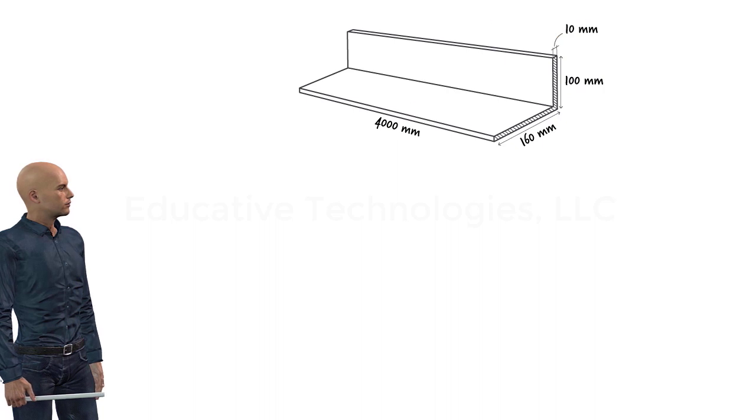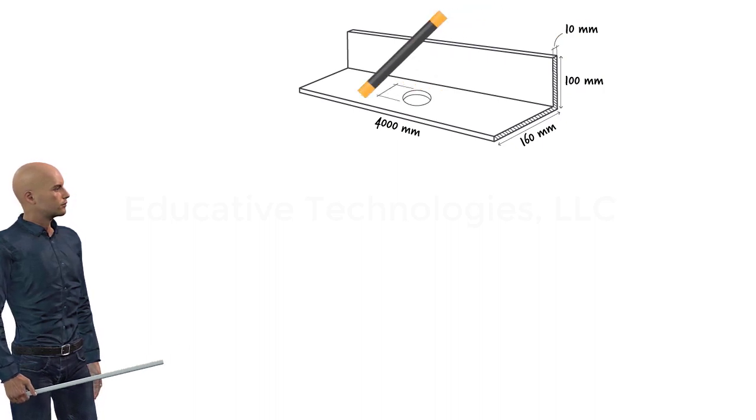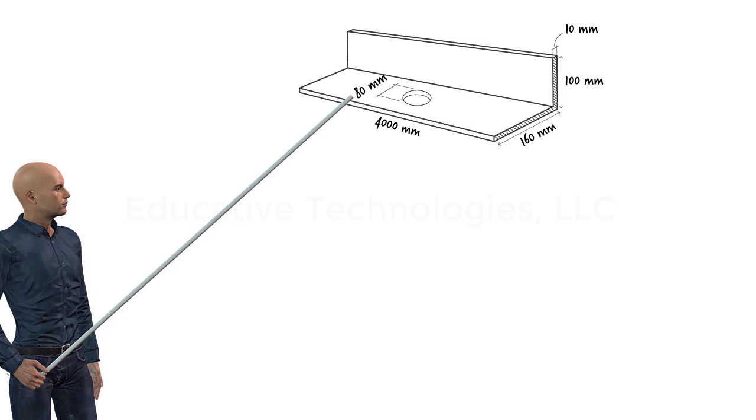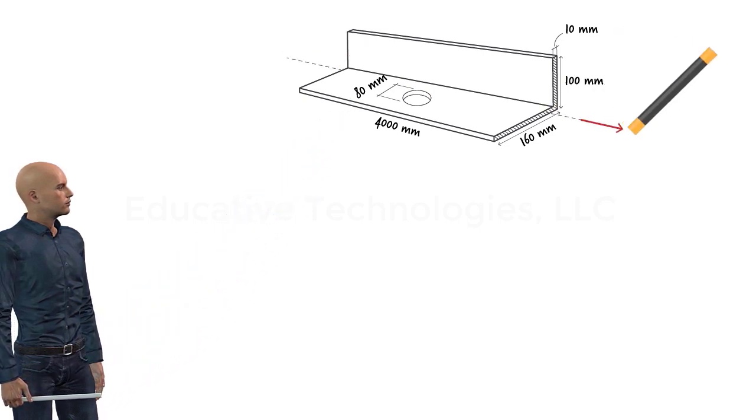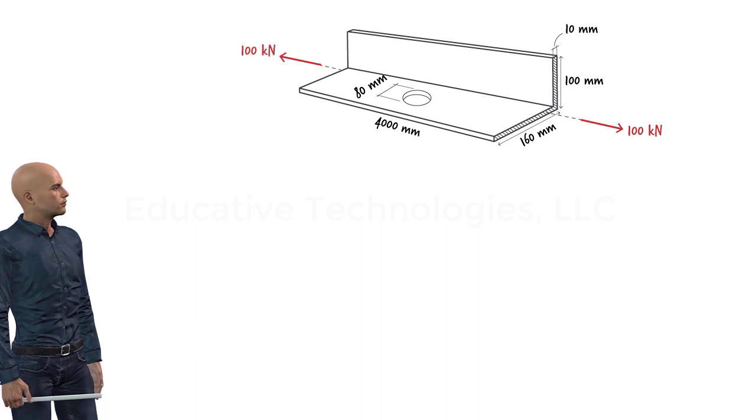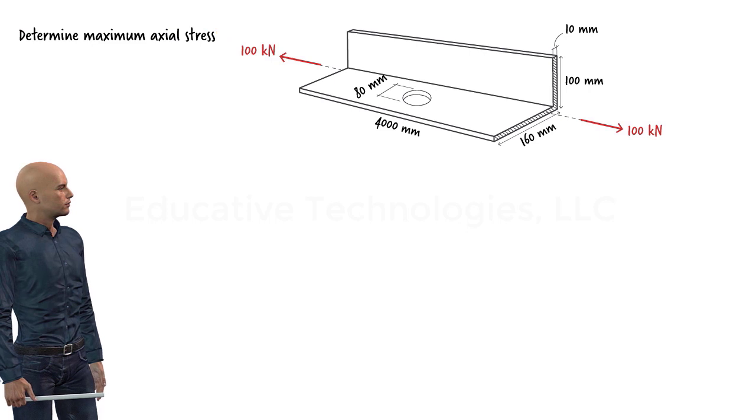There is a hole in one of the legs of the angle in the middle of the member. The diameter of the hole is 80 millimeters. The member is subjected to a tensile force of 100 kilonewtons. We wish to determine the maximum axial stress in the member.